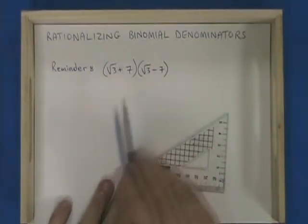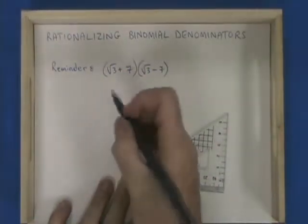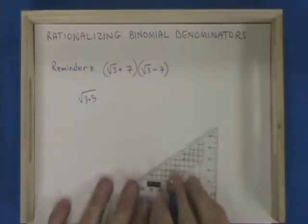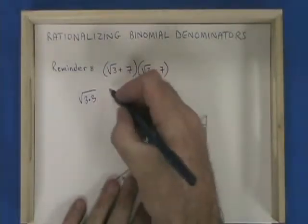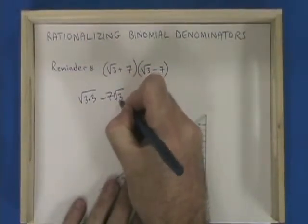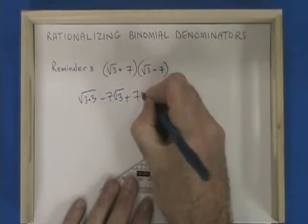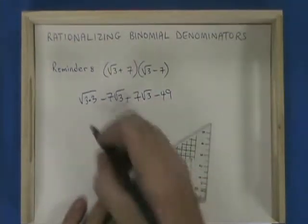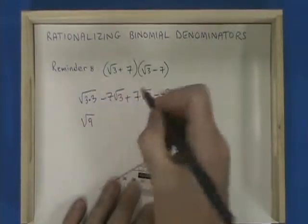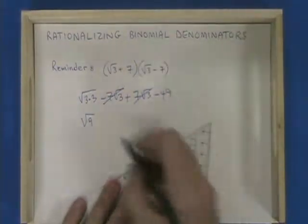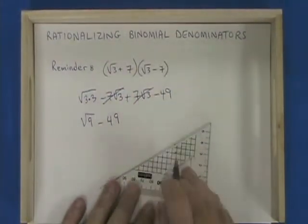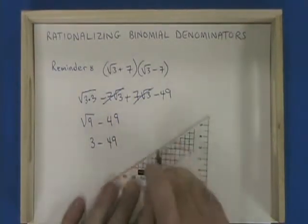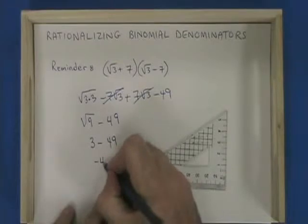When we multiply these two expressions, we get 3 times 3 in a radical minus 7 root 3 plus 7 root 3 minus 49. Simplifying, this becomes root 9. These two terms cancel, and we have minus 49. The square root of 9 is 3, 3 minus 49. Our answer is negative 46.